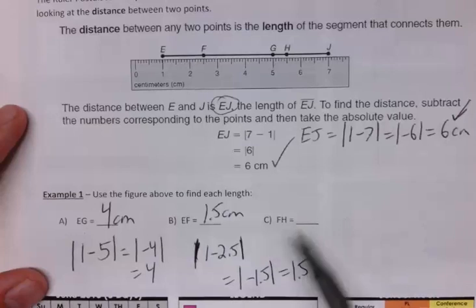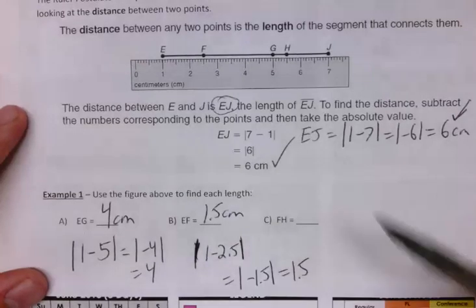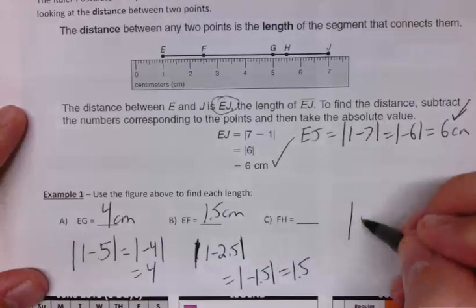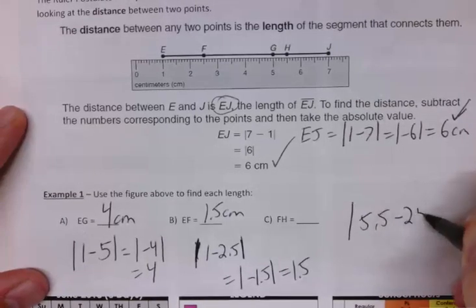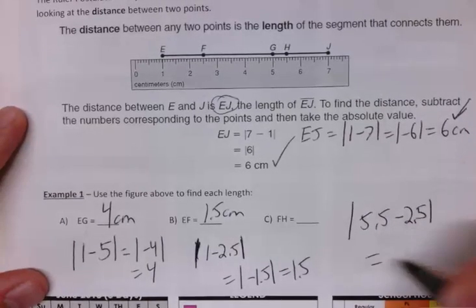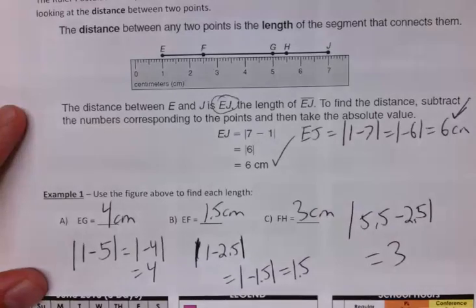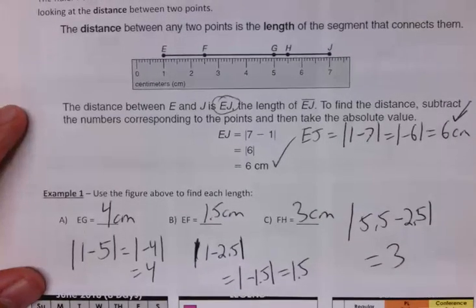How about FH? I'll do it the other way this time. F is at 2.5 and H is at 5.5. So I'm going to go 5.5 minus 2.5, which of course is just 3. So 3 centimeters. And that's it. That's how you use the ruler postulate to find distance.